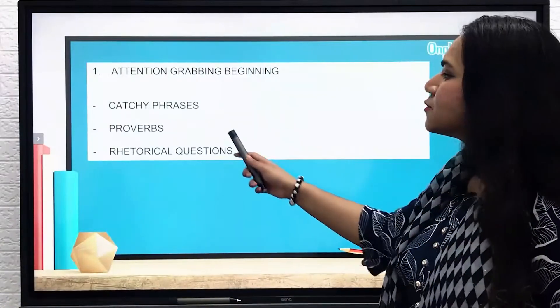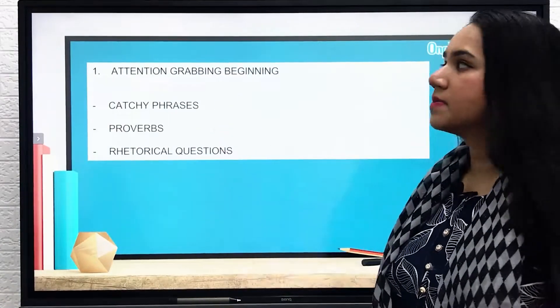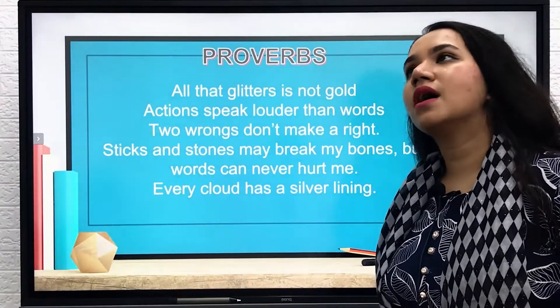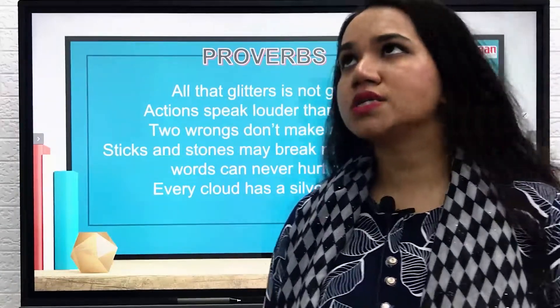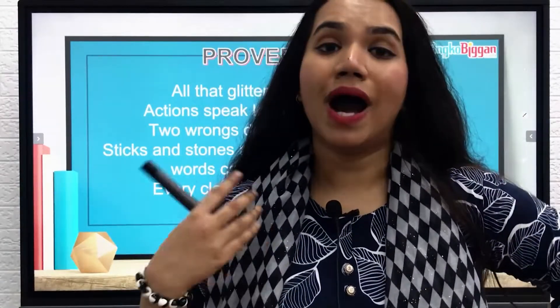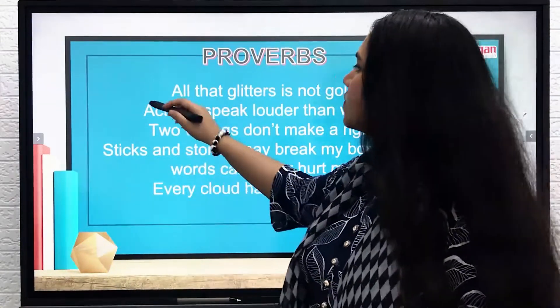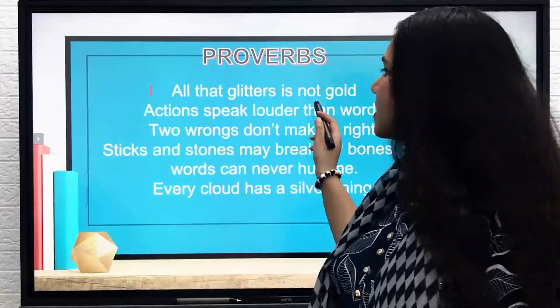The second thing is proverbs for an attention-grabbing beginning. A proverb is a sentence — it can be a group of words, a clause, or a phrase. Most of the time, a proverb is a sentence which a famous or very wise person has once said, because all proverbs carry particular wise sayings that can be used in our daily lives. For example, the first proverb on the board is 'all that glitters is not gold.'